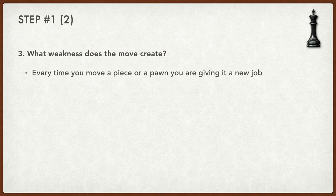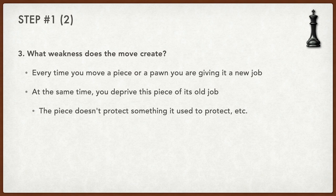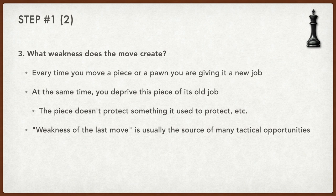In chess, every time you move a piece or a pawn, you give that piece a new job, but at the same time you deprive it of its old job. So what was this piece doing before your opponent moved it? Maybe it protected some other piece or pawn. Once this piece is moved, there is a weakness left behind. For example, the piece no longer protects something it used to protect. This is called the weakness of the last move, and it is usually the source of many tactical opportunities. If you ask yourself this question, you are less likely to miss tactical opportunities.